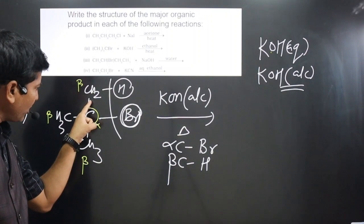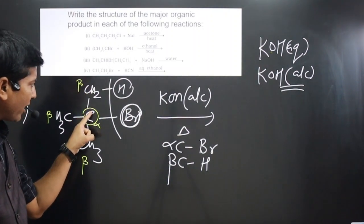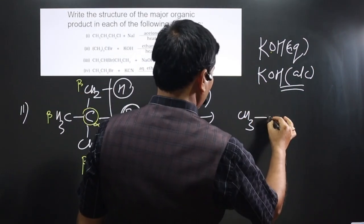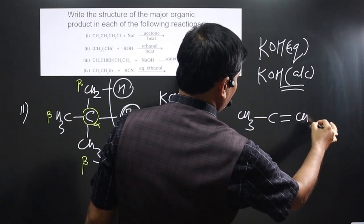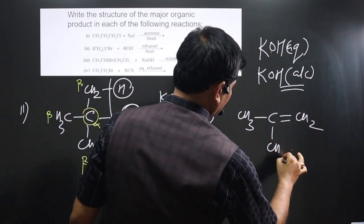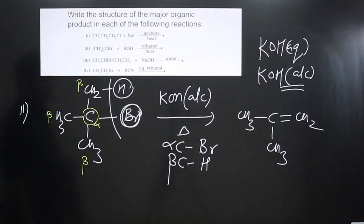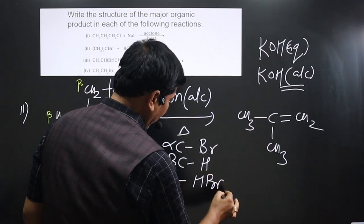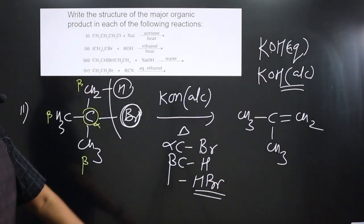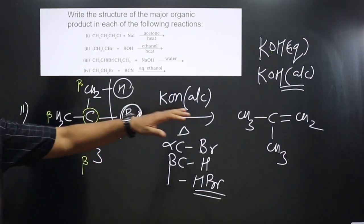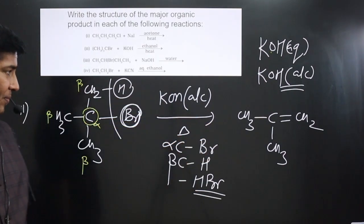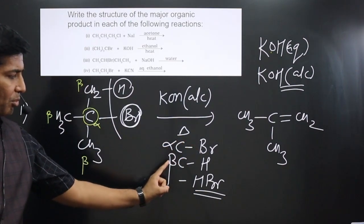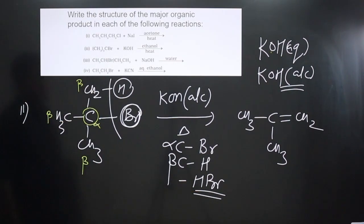This is also an example of a dehydrohalogenation elimination reaction. When we remove Br from the alpha carbon and H from the beta carbon, we introduce a double bond to satisfy the valency of those two carbons. The product formed is CH₃C(=CH₂)CH₃ — an alkene. The HBr eliminated is utilized by KOH. In elimination reactions, we always get an alkene.